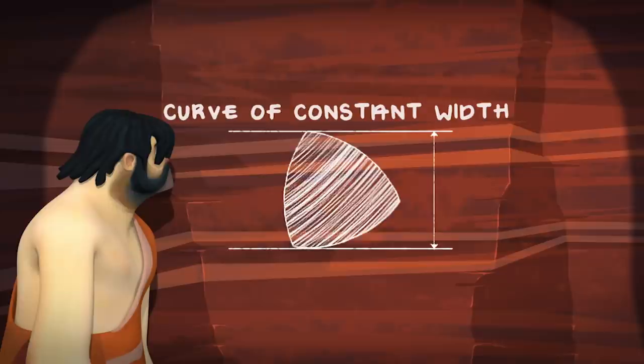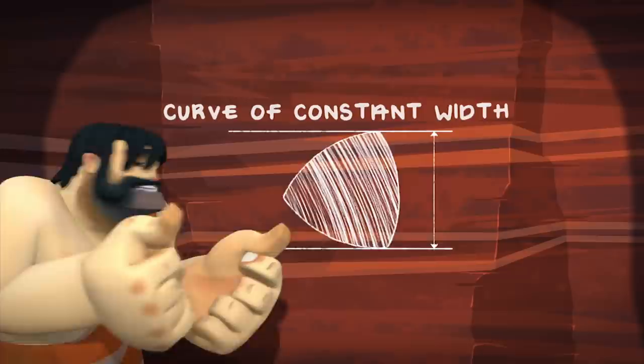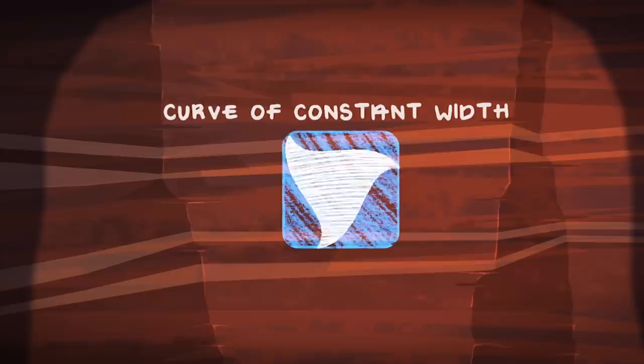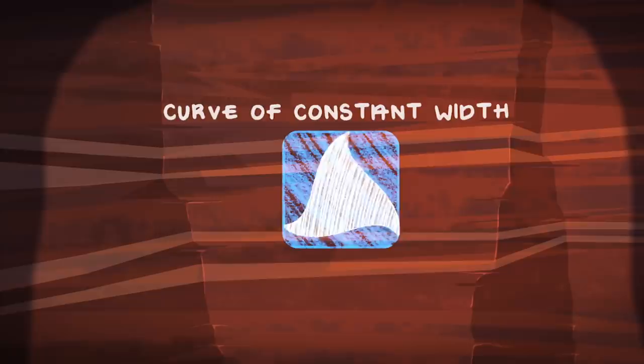Because Reuleaux triangles can rotate between parallel lines without changing their distance, they can work as wheels, provided a little creative engineering. And if you rotate one while rolling its midpoint in a nearly circular path, its perimeter traces out a square with rounded corners, allowing triangular drill bits to carve out square holes.